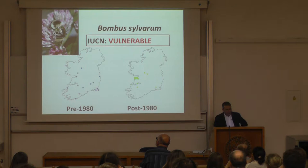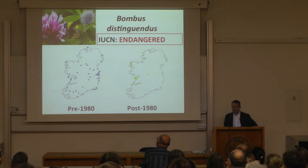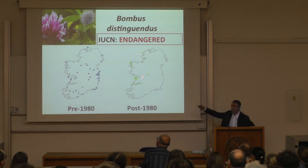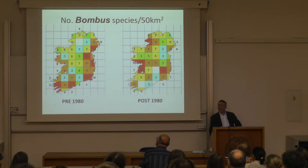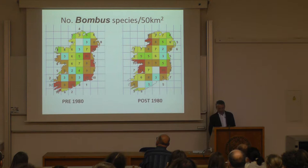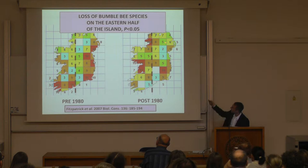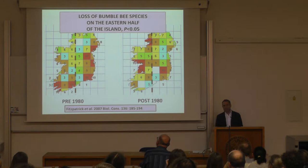Some other bumblebee species have changed. Bombus muscorum, which used to be formally widespread in Britain and Ireland, is now very much restricted to the west coast. Bombus distinguendus is mainly restricted to the west coast as well, whereas formerly it was widespread. A formal analysis plotting for 50-kilometer squares the number of species pre-1980 and post-1980, accounting for observer effort, shows a decline on the east coast of Ireland and the eastern half, but no change on the western half.